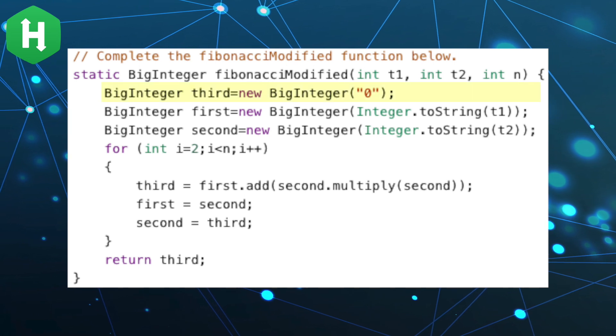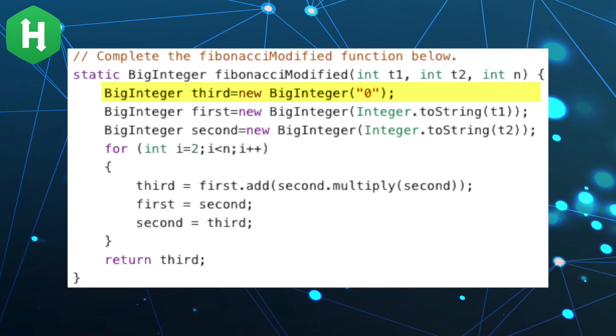First, let's instantiate a BigInteger named third with the value of zero.